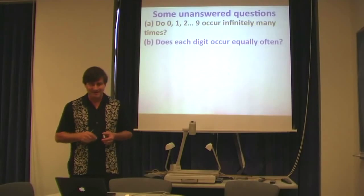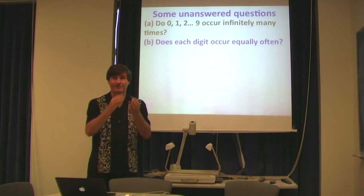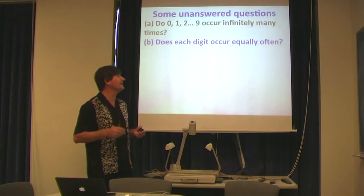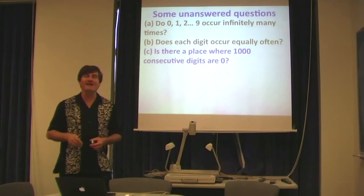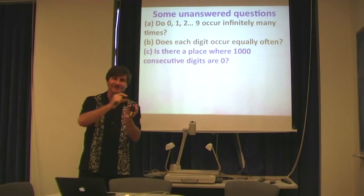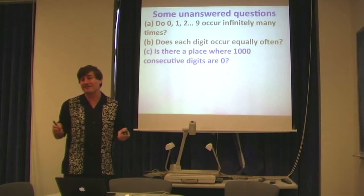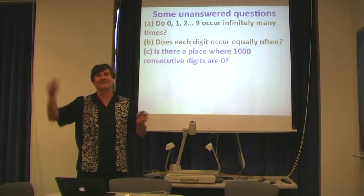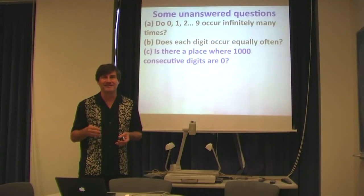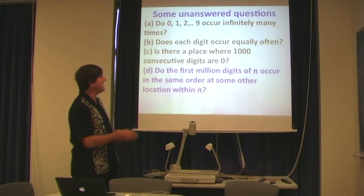Does each digit occur equally often? Do 1s and 2s and 5s occur with the same relative frequency equally often? We don't really know that. Is there a place where there's 1,000 consecutive values of 0, that is, 1,000 consecutive 0s in this long string of numbers that is pi? We actually don't know that. We've never taken pi out to sufficiently many digits to see if there's a string of 1,000 digits. So far, we haven't found such a string, but it doesn't mean that it doesn't exist.